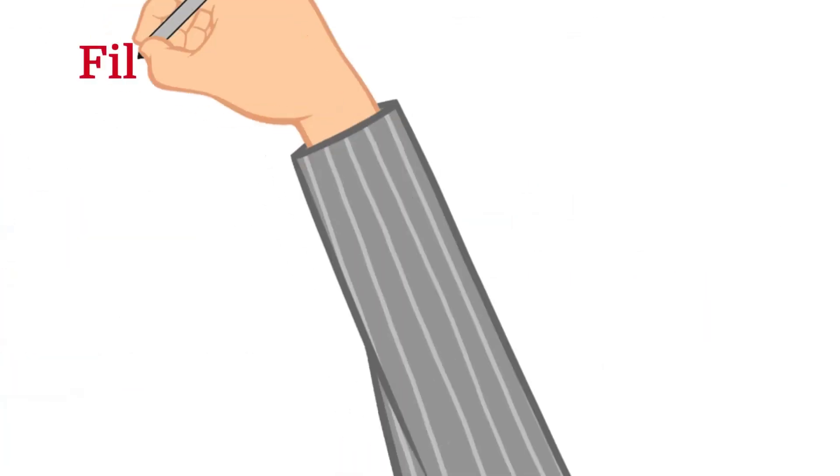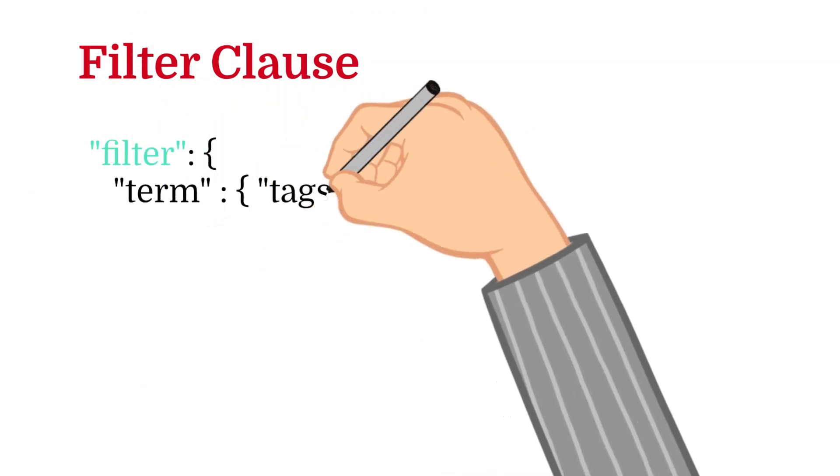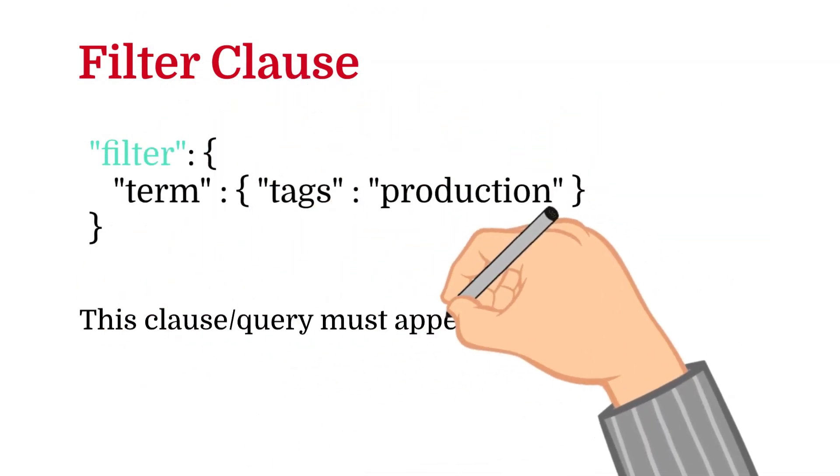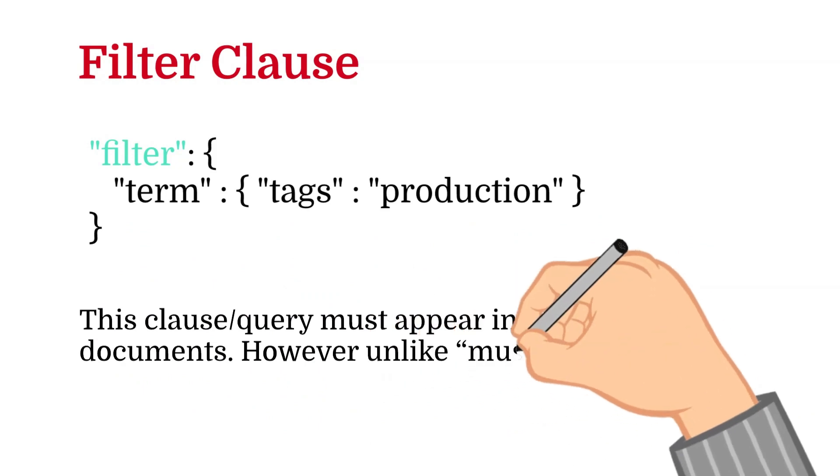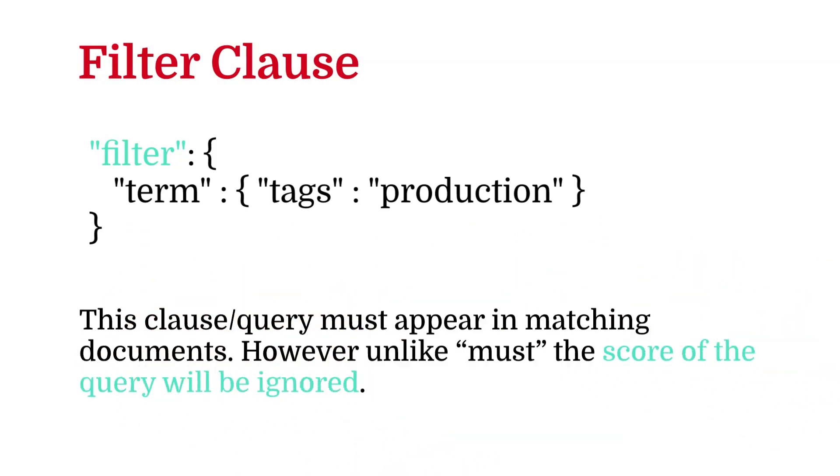The second clause is known as filter. Filter clause or query must appear in the matching document. However, unlike must, the score of the query will be ignored. Filter clauses are executed in filter context. I can create another video to explain the filter context, but I need comments from you about your interest in learning this. Clauses used in the filter parameter are considered for caching, which is an automated process provided by Elasticsearch.